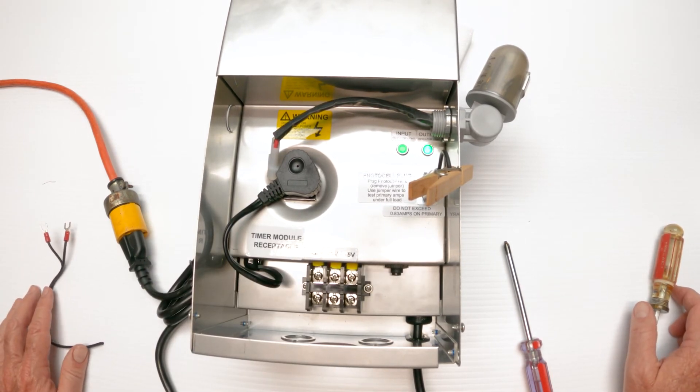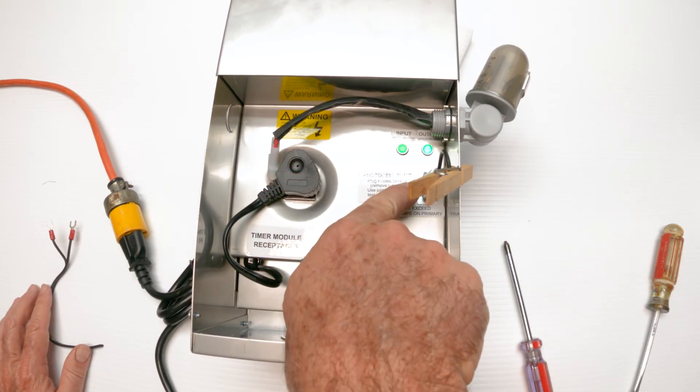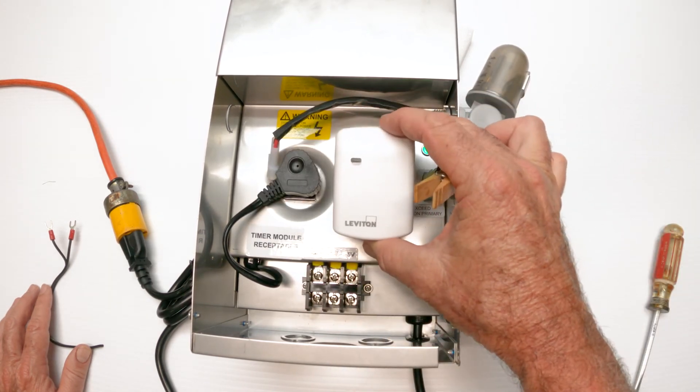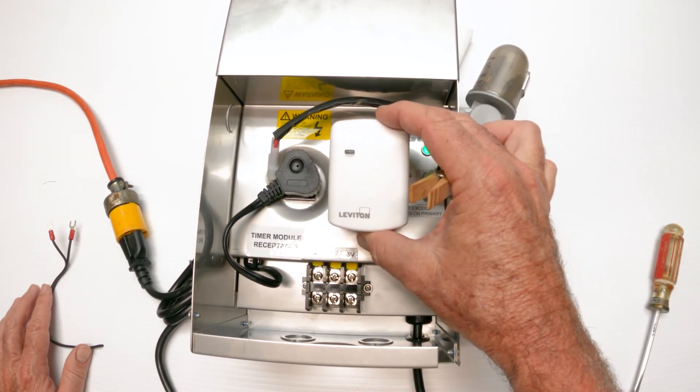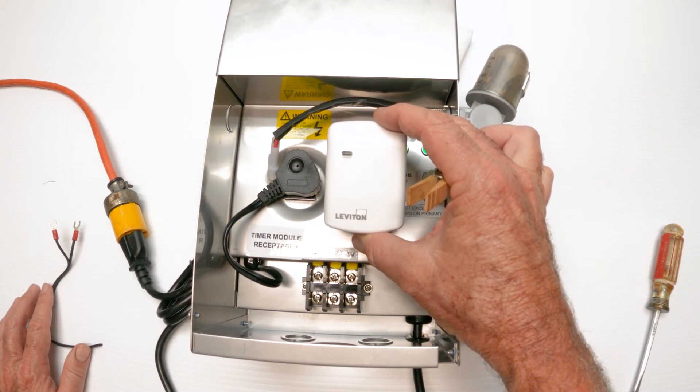In our next video, we're going to go into a lot of detail about the timer, the photo cell, and if you're using a Wi-Fi device as a variable. The Wi-Fi devices are easily installed. They work really, really good and we're going to show you how all that comes together and again how to check it.